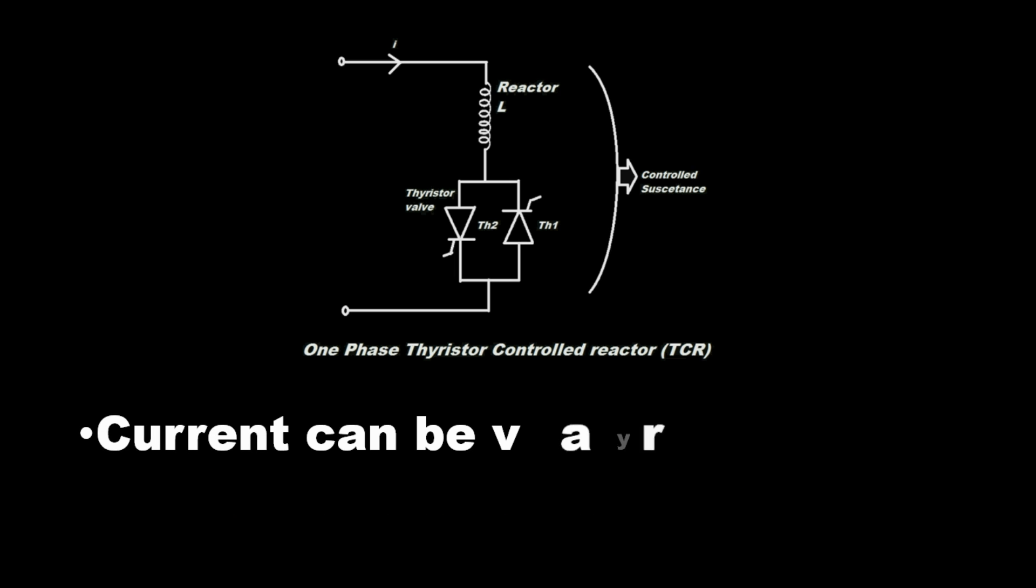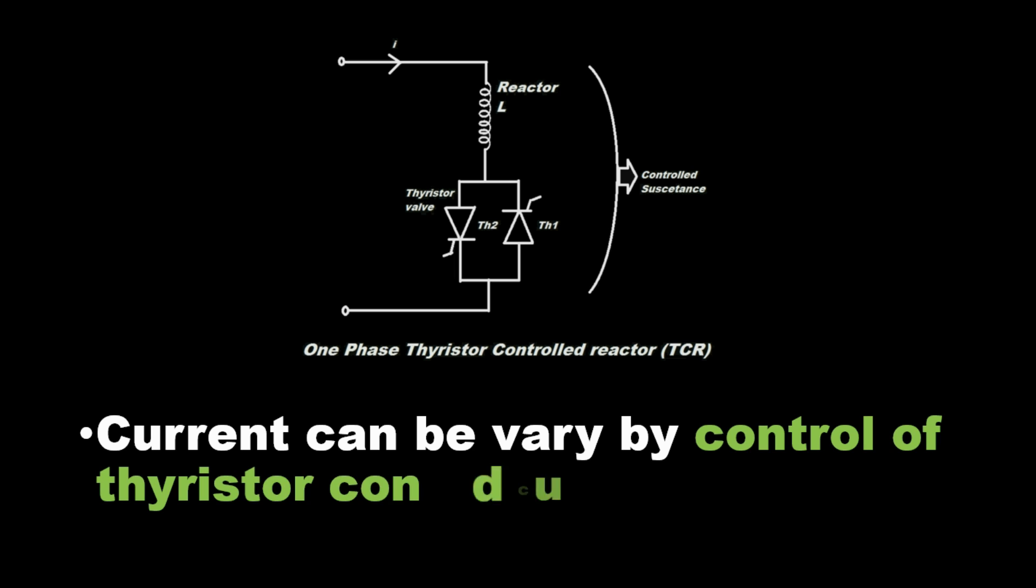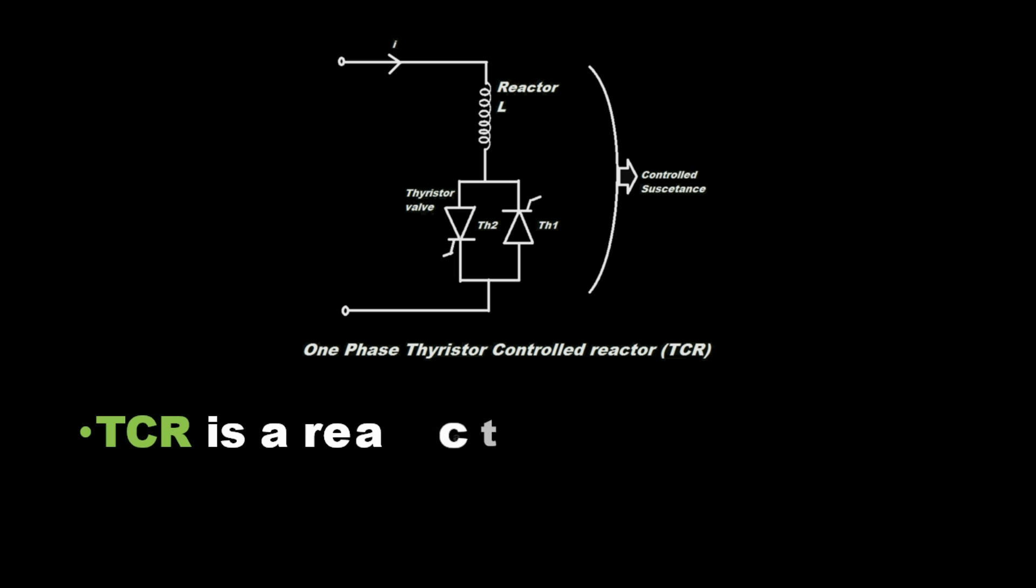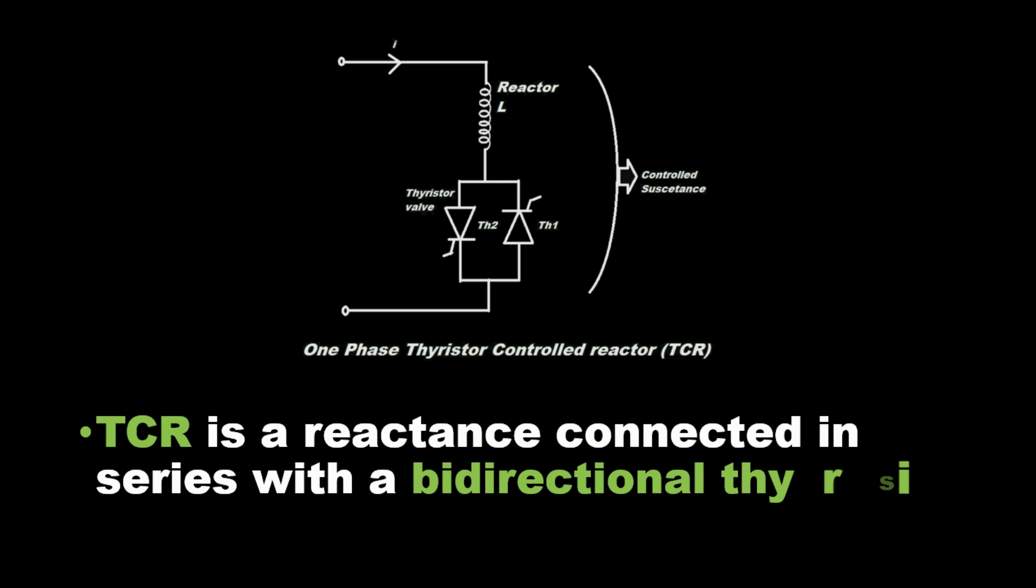Current can be varied by control of thyristor conduction. TCR is a reactance connected in series with a bidirectional thyristor valve.